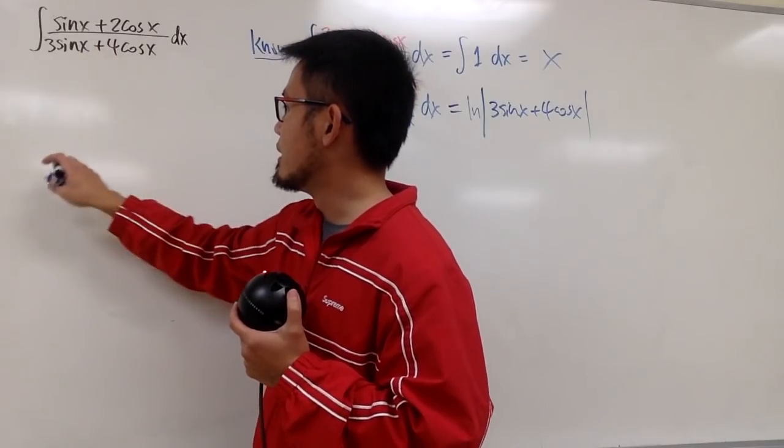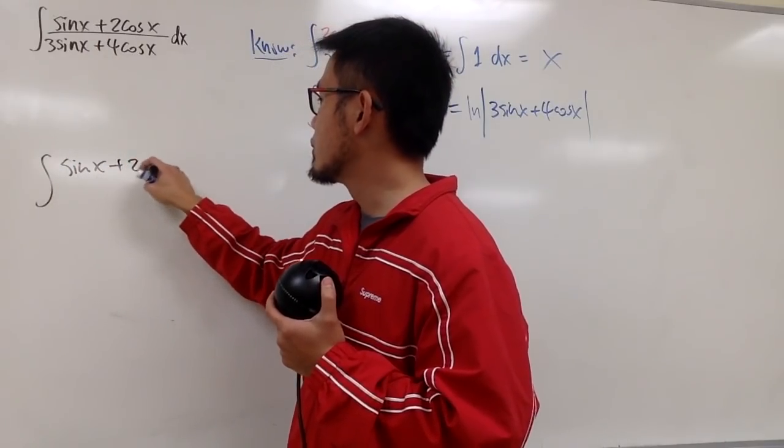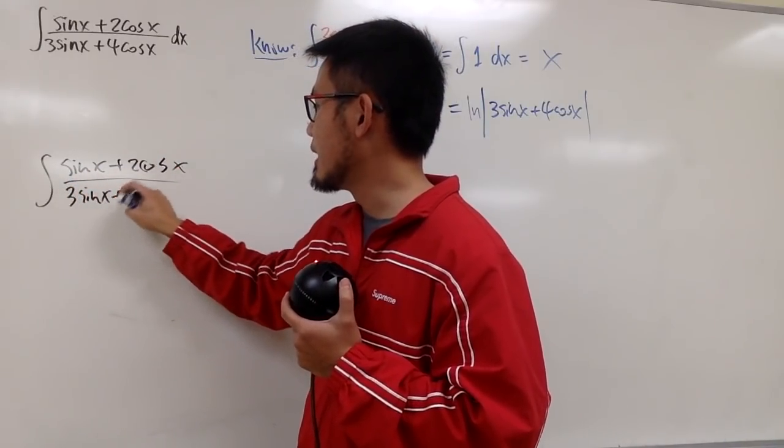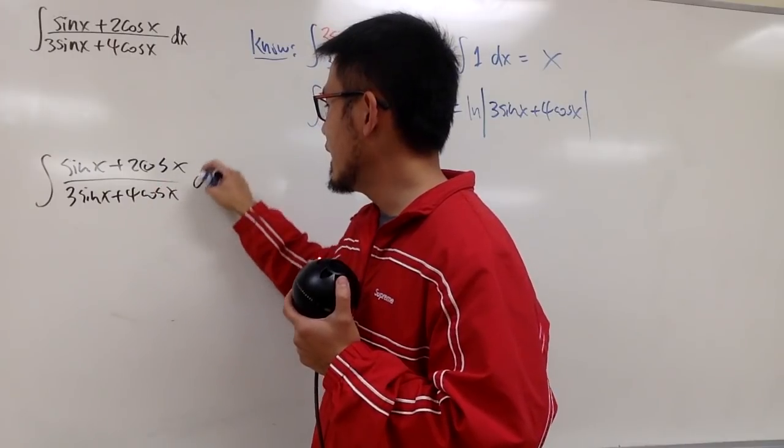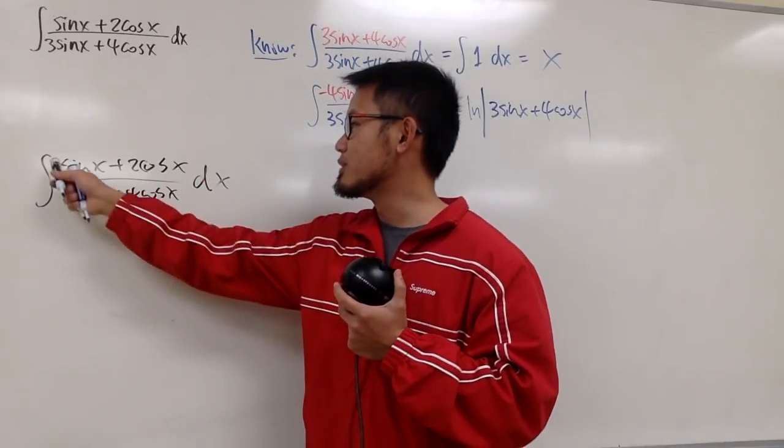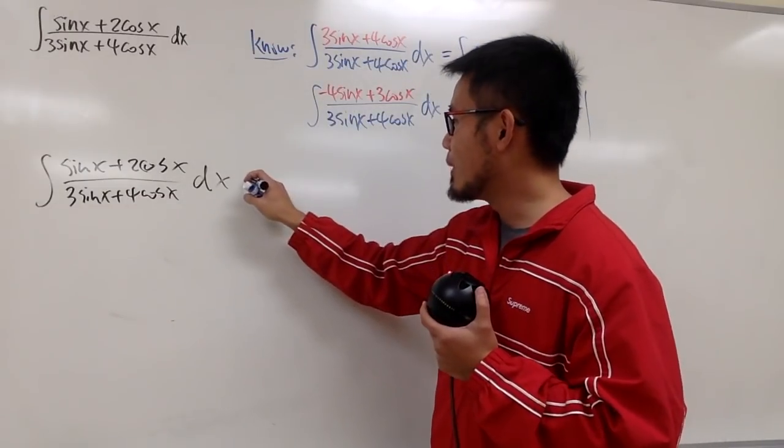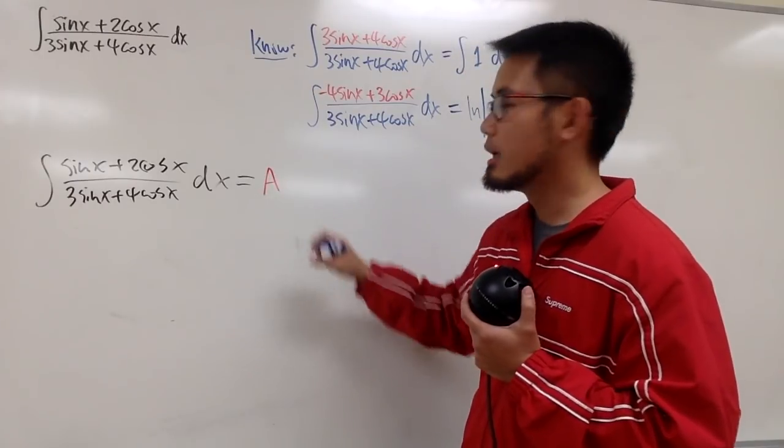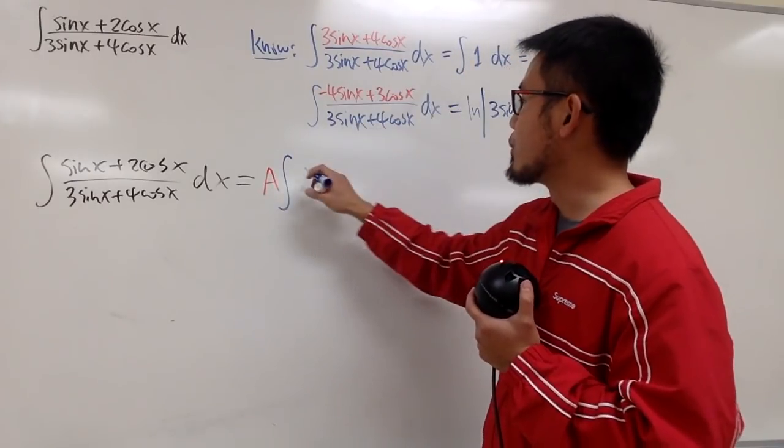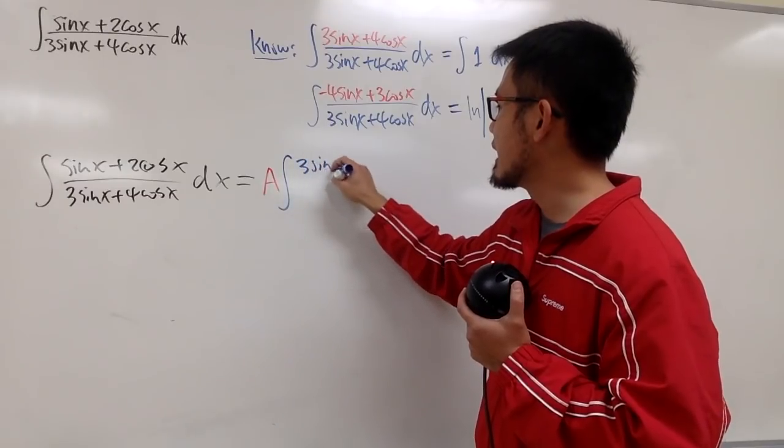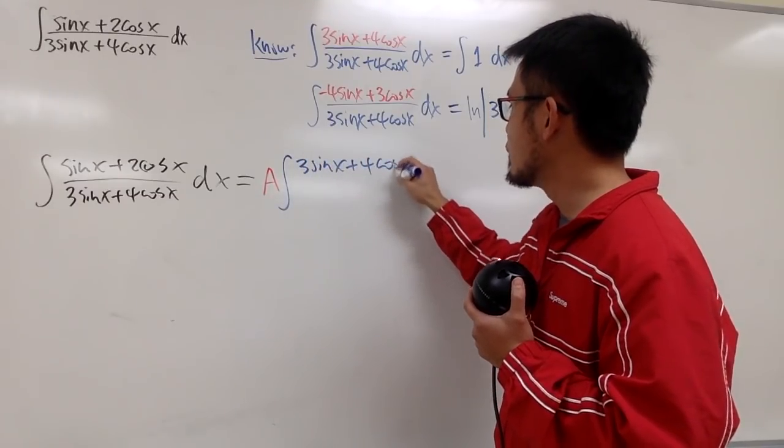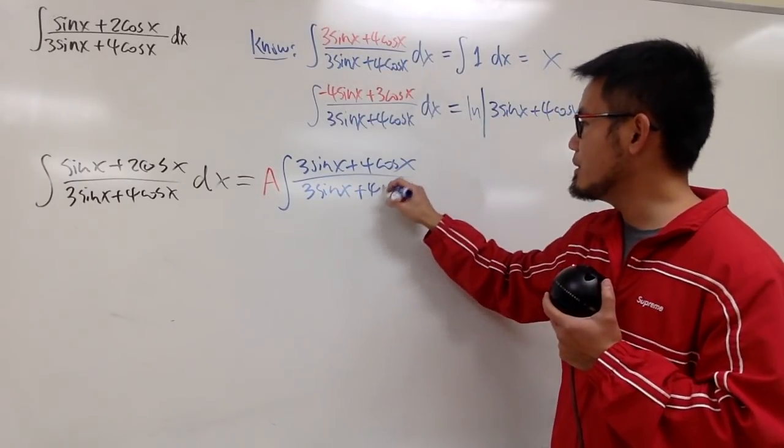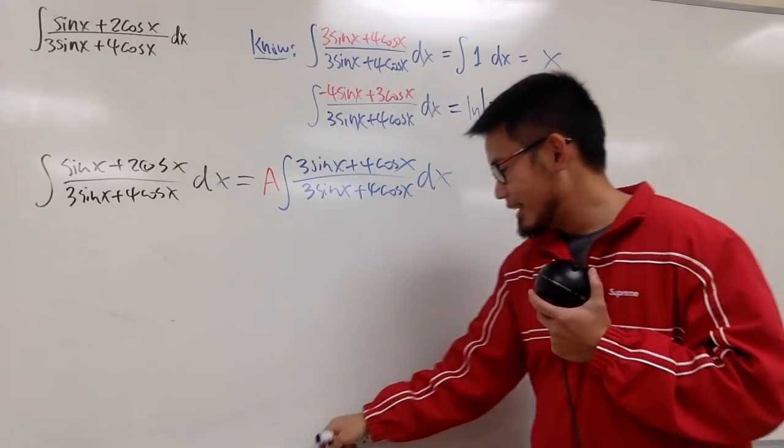I want to have the integral sin x plus 2 cosine x over 3 sine x plus 4 cosine x. And if you guys haven't noticed already, this is 1, 2, 3, 4. Okay, I'll make that happen. But anyway, I want to make this equal to some constant. I'll just call that to be a times this integral instead, so I will just put down 3 sine x plus 4 cosine x over, I know this is kind of redundant, but you know, maybe this is going to help us out, so just be patient.